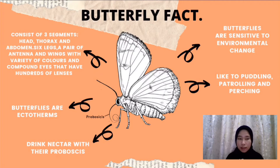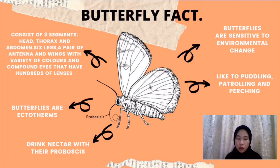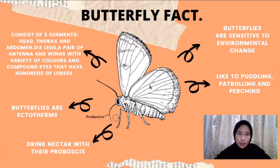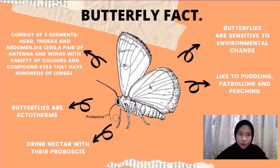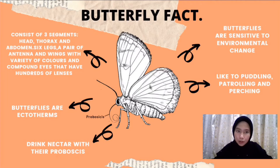Butterflies are ectotherms, which means they cannot fly when their body is cool. They rely on external heat sources and their body temperature changes according to the temperature of the environment. Adult butterflies drink nectar from flowers through their flexible tongue called a proboscis. There are three behaviours of butterfly which are puddling, patrolling and perching.